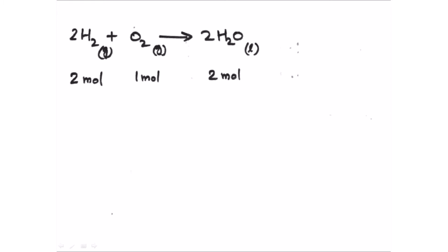From the balanced equation: 2 moles of hydrogen is 4 grams of hydrogen, 1 mole of oxygen is 32 grams of oxygen, and 2 moles of water is 36 grams of water. If you check the law of conservation of mass: 4 plus 32 equals 36, so mass is preserved.